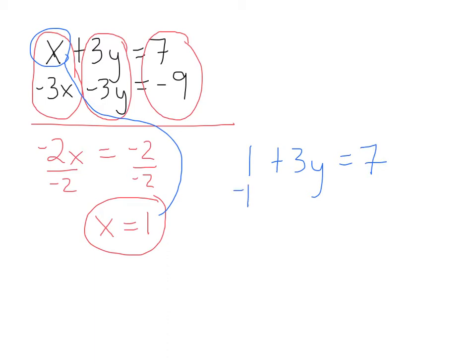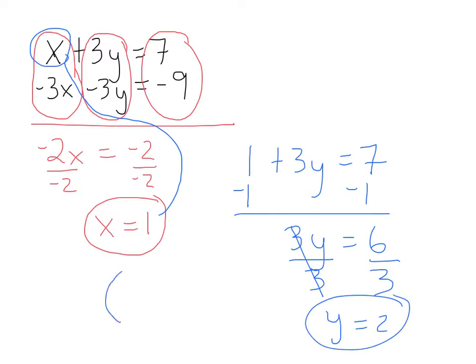And so I'll subtract 1 on both sides. And I have 3y equals 6. And then I'll divide 3 on both sides. And so when I divide 3 on both sides, y equals 2. And so now I've solved the system of equations. The solution will be at the point (1, 2) where x equals 1 and y equals 2. That's where they'll intersect.